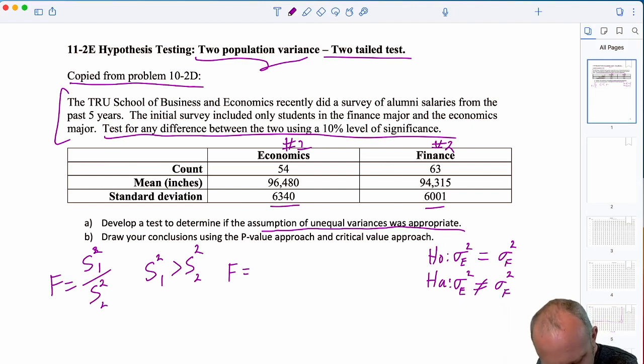So, when I calculate my test statistic, I have 6340 squared over 6001 squared. This gives me a test statistic of 1.12. And you must see the pattern. You must see the routine. All of these tests that we've done, following that same pattern, right? We formulate the test. We've defined our terms. We've got our test statistic. What's next?